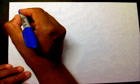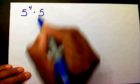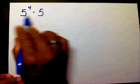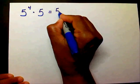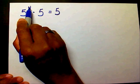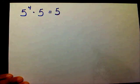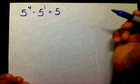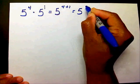I have 5 to the fourth times 5. This one is just a little bit different, but I still have the same base so I'm going to bring my base over. This base has a 4 exponent, and this base has no written exponent — but there actually is an exponent there; we just don't write the exponent when it's 1. So we can write a little 1 right here, and we know that's going to be 5 to the 4 plus 1, which is 5 to the fifth power.